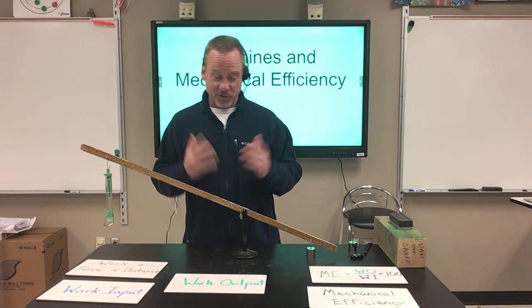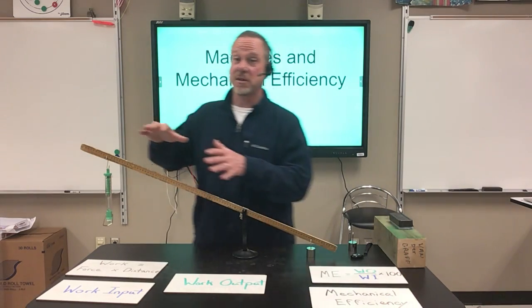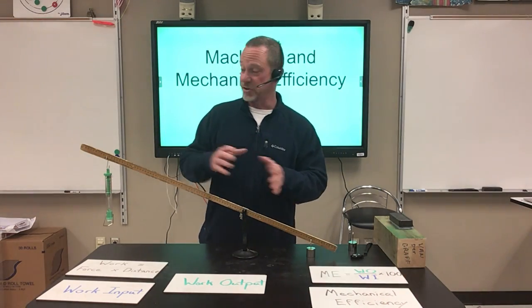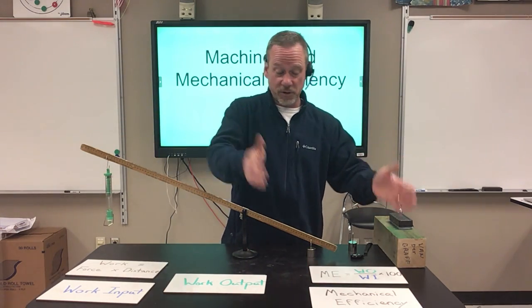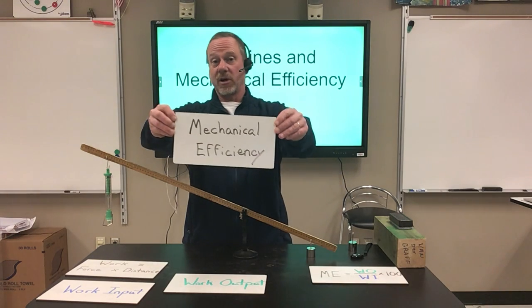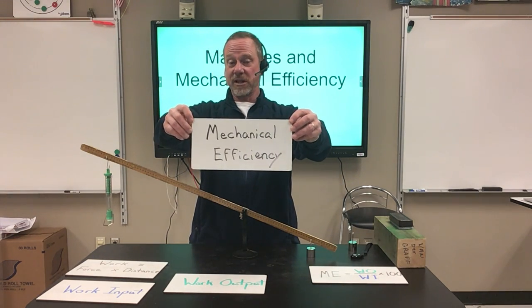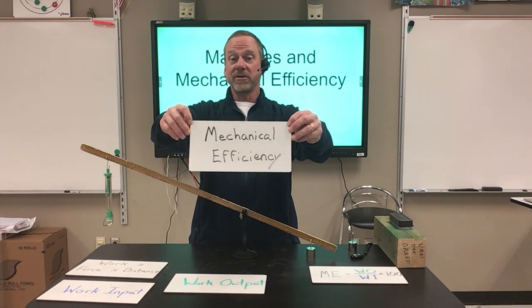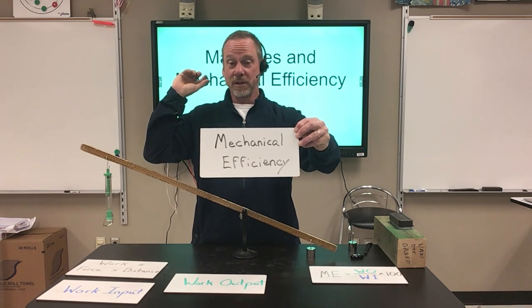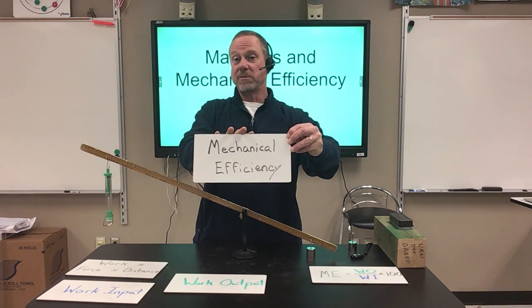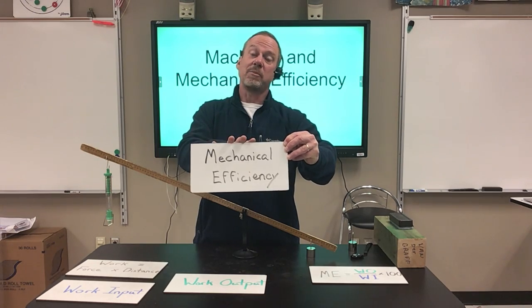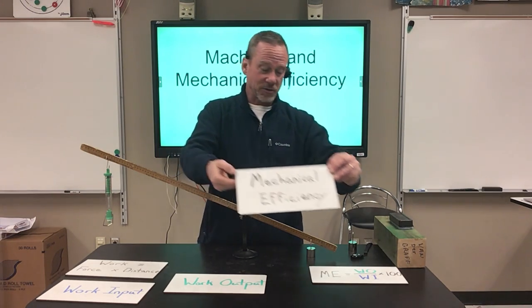Not all machines are the same. Some machines are pretty good — you put in so much work and you get almost the same amount out. This lever would be a good example. Anyhow, we like to compare for each machine how much work we put in versus how much work we get out, and there's a term for that — it's called mechanical efficiency, which you can see on the board. It's something we can measure and compare to learn how well a machine works.